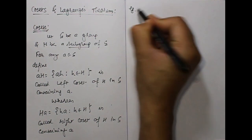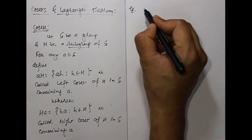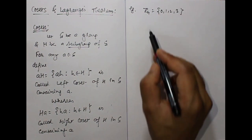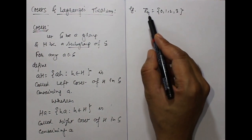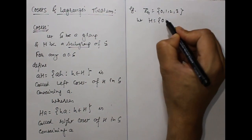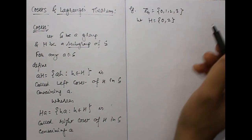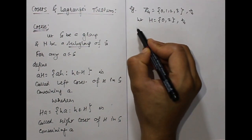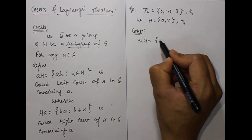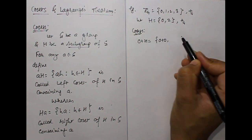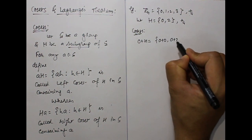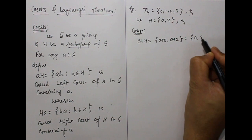For example, we take a simple example. Let Z4 equals {0, 1, 2, 3}, which is the group of integers modulo 4. Let H be a subgroup of Z4 which contains two elements, specifically {0, 2}. For the coset of 0: 0 + H is the left coset: 0 + 0 and 0 + 2, where plus means addition modulo 4, giving {0, 2}.